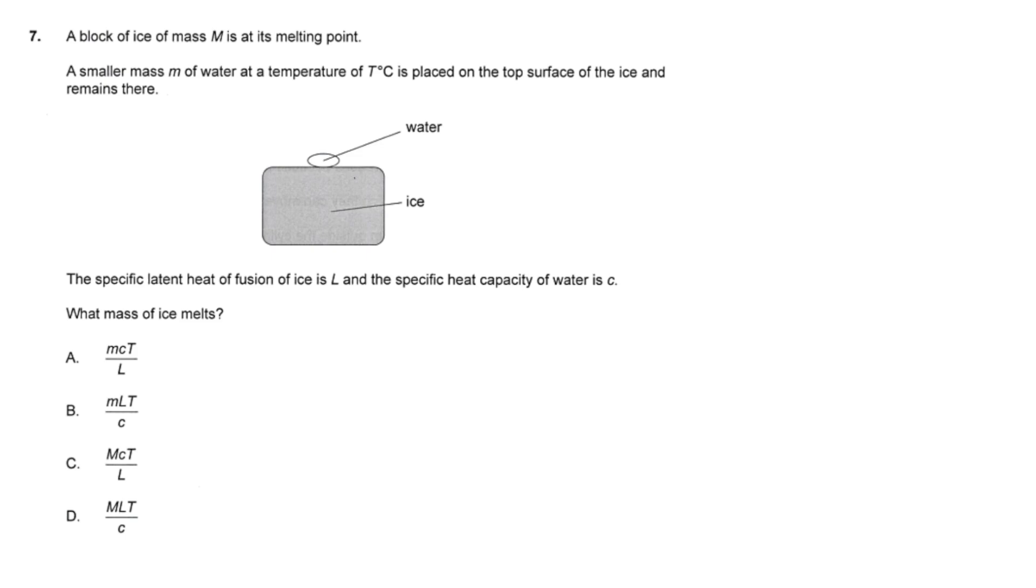That means that the water must cool down to 0 degrees Celsius in order for thermal equilibrium to be reached. And this is 0 degrees Celsius because we're given that the block of ice is at its melting point, which is 0 degrees Celsius. So the change in temperature for the water is going to be T. It starts at T and cools down all the way to 0, so the change is T.